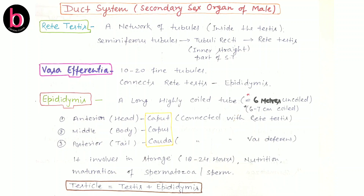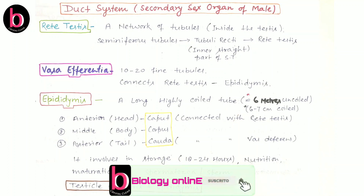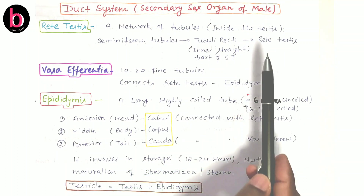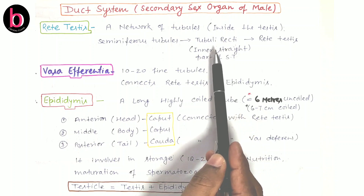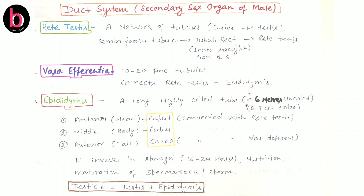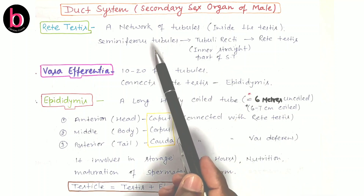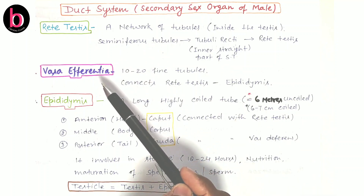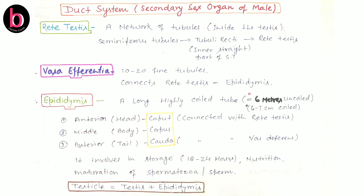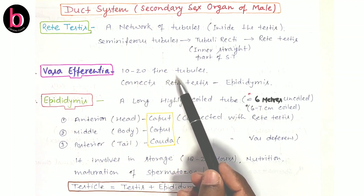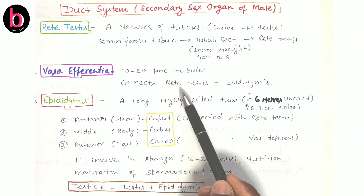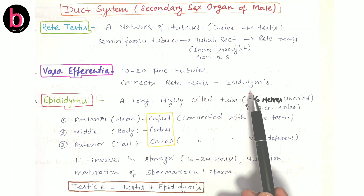Rete testis is a link between seminiferous tubules and vas efferentia. There is also a structure called tubuli recti between rete testis and seminiferous tubules, which you can also memorize. The key exam point is that rete testis connects seminiferous tubules and vas efferentia. Next is vas efferentia — they are 10 to 20 in number, are fine tubular structures, and connect rete testis to the epididymis.